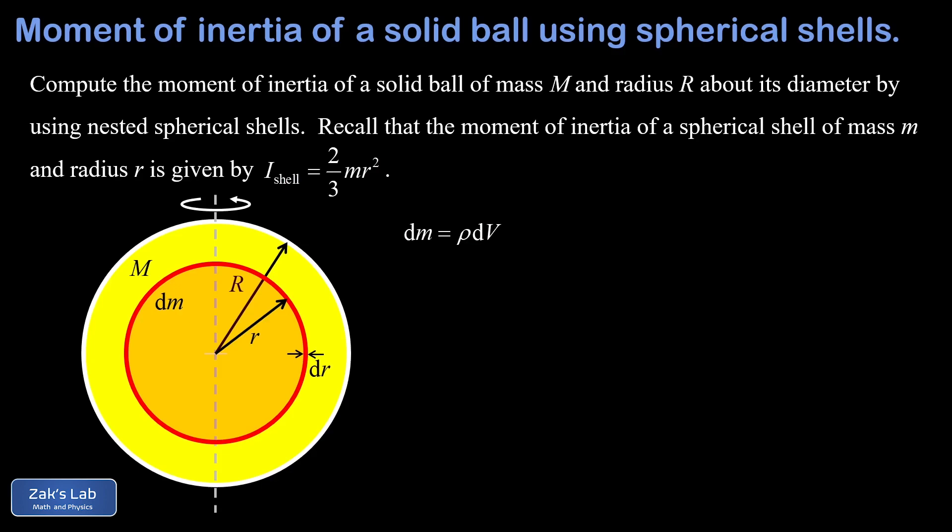Well, since I'm wearing my physics hat at the moment, I'm just going to wave my hands around a little and say the volume in the shell is given by the surface area multiplied by the thickness. And since the surface area of a sphere is 4 pi r squared, we get 4 pi r squared times dr.